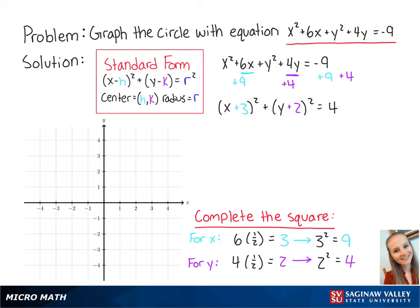Now that our equation is in standard form, we know that h is equal to negative 3, k is equal to negative 2 and r squared is equal to 4. This means that r is equal to the square root of 4 which is equal to 2.